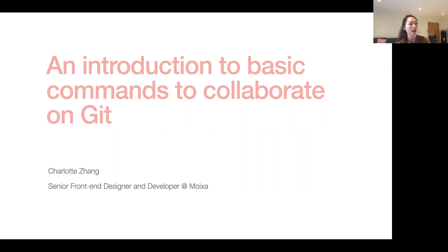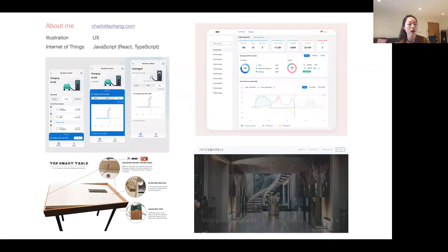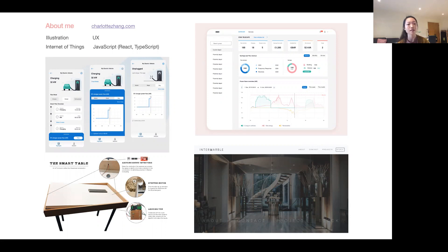As for myself, I'm interested in the visual part of programming. I do digital illustrations and UX design interfaces. I use JavaScript to code the front end and I'm particularly interested in Internet of Things — that's why I ended up at Moixa and working for them.